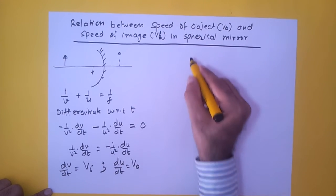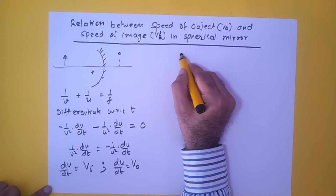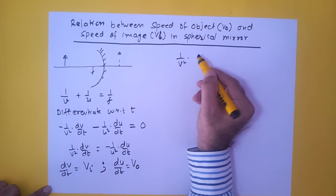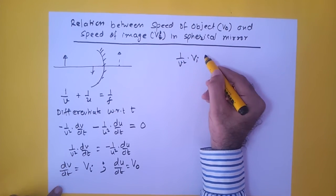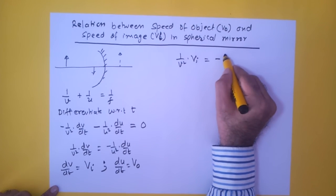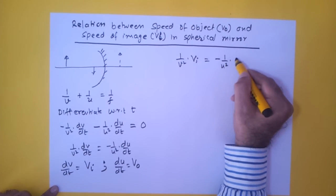So I can put that over here. So I'll get 1 upon v square dv by dt is V_I is equal to minus 1 upon u square du by dt is V_O.